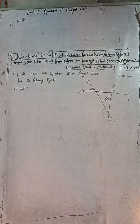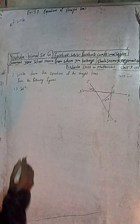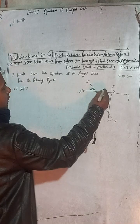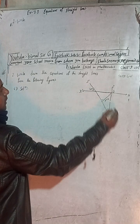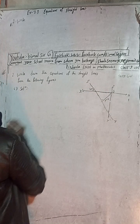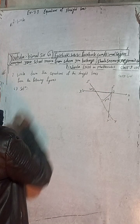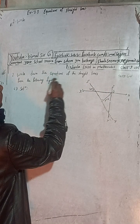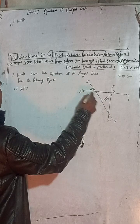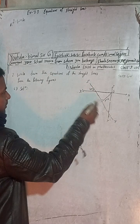This is question number 2C. Here we can see this is the figure and we have to write down the equation of this straight line. ST is the straight line from this figure.